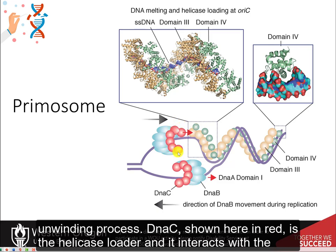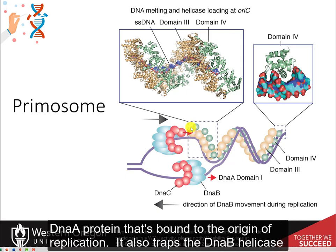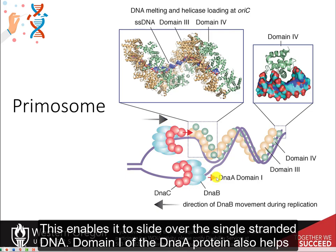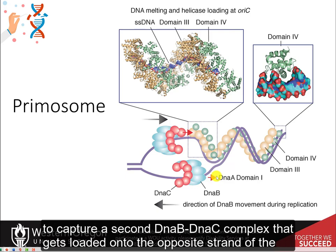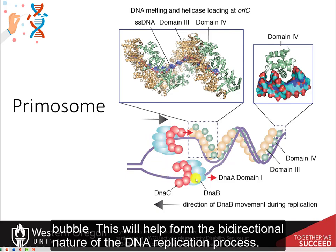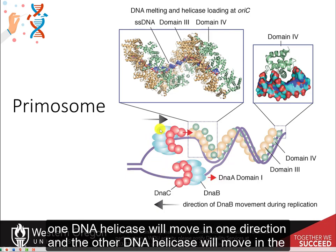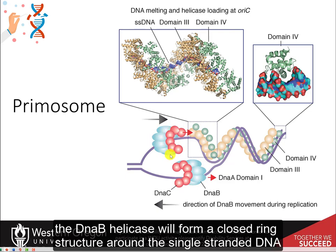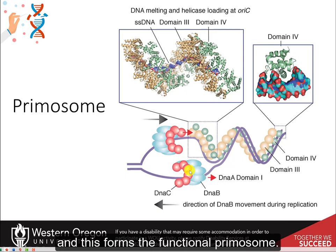DnaC, shown here in red, is the helicase loader and it interacts with the DnaA protein that's bound to the origin of replication. It also traps the DnaB helicase enzyme in an open lock washer conformation where it looks like the letter C, enabling it to slide over the single-stranded DNA. Domain 1 of the DnaA protein also helps to capture a second DnaB and DnaC complex that gets loaded onto the opposite strand of the bubble. This will help form the bidirectional nature of the DNA replication process — one DNA helicase will move in one direction and the other in the opposite direction. Once the DnaC protein falls off, the DnaB helicase will form a closed ring structure around the single-stranded DNA, forming the functional primosome.